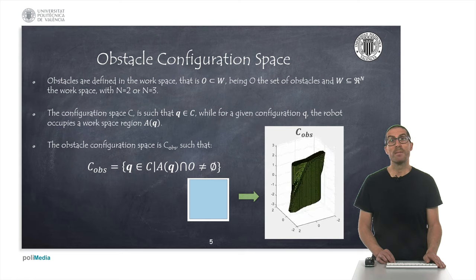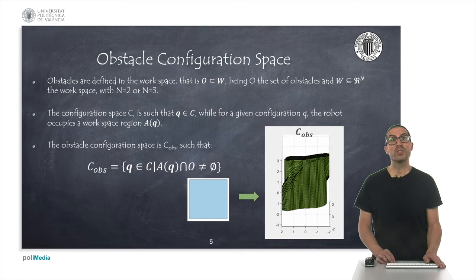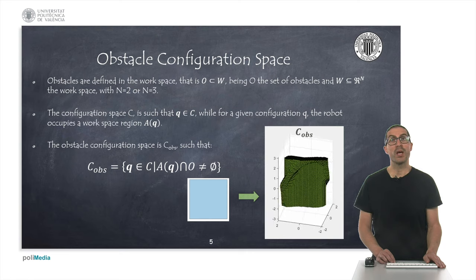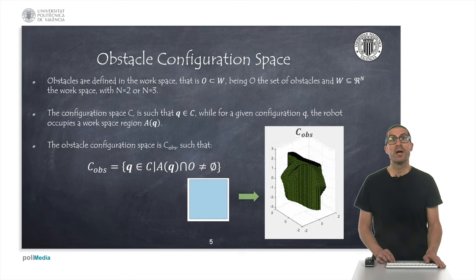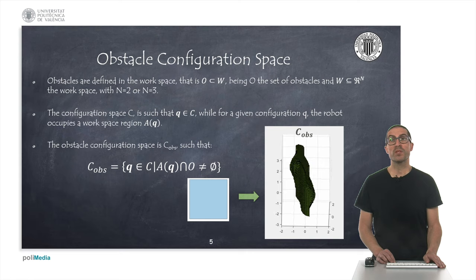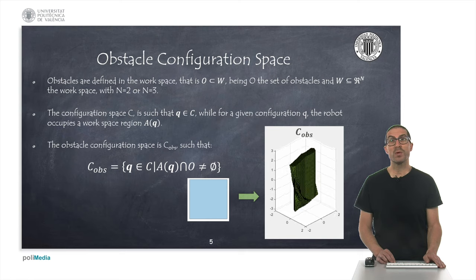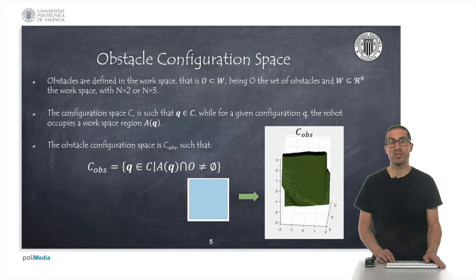On the other hand, a new concept that we haven't seen so far is the configuration space for obstacles, or COPs. This is the region in which the configuration space, the robot intersects with the obstacles. In the animated figure, we see the configuration space of an obstacle for a robot with 3 degrees of freedom. The obstacle is actually a square region, but given the robot's geometry, it has generated the volume that you can see in the animation.